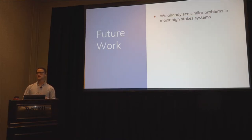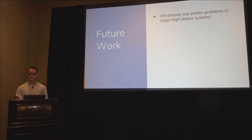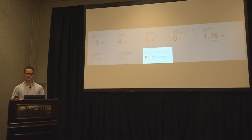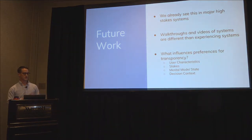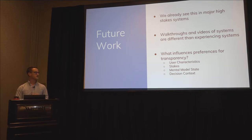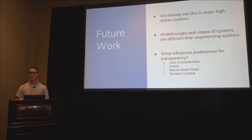While this isn't the most high-stakes system, the problems identified are already appearing in major high-stakes systems we're testing — the learning analytics example with domain experts has replicated these results almost uncannily, suggesting these are generalizable findings. There's also a methodological point: walkthroughs and videos of systems are actually different from experiencing them. Users watched a video and said they want transparency, then once they used it said, 'I'm not sure that's what I asked for.' There's also more to explore: what user characteristics, stakes of decision, mental model state, and context influence preference for transparency.